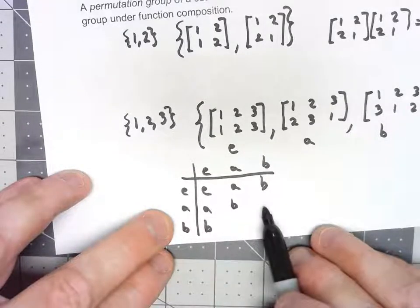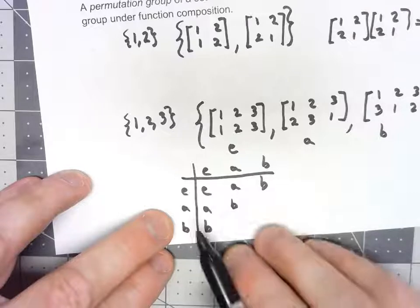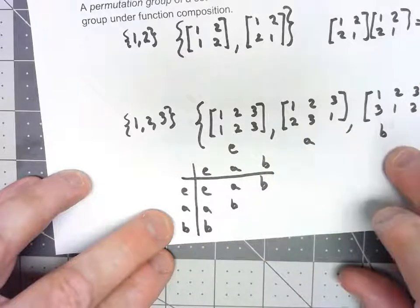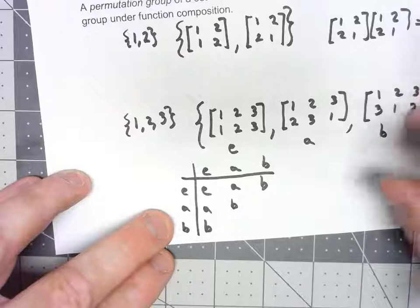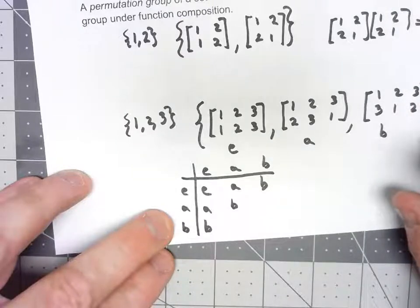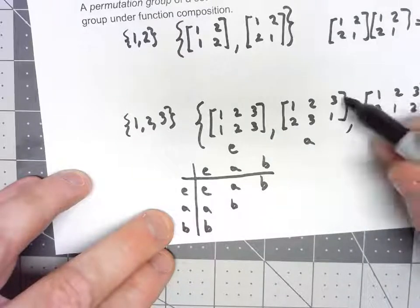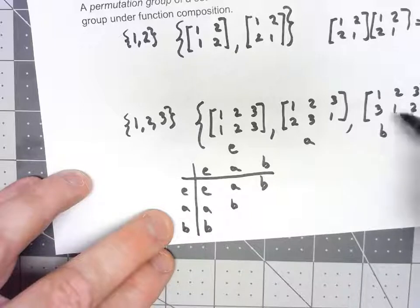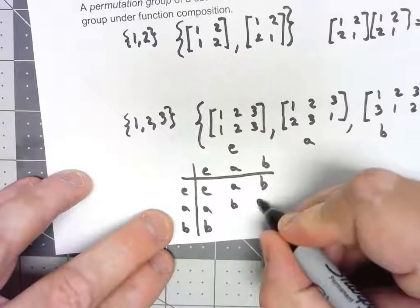What about AB? So again, when I do AB, the B is on the right, so that's going to be done first in terms of the function. 1 goes to 3, 3 goes to 1, 2 goes to 1, 1 goes to 2, 3 goes to 3. So each thing, 1 goes to 1, 2 goes to 2, 3 goes to 3, that gives me the identity.